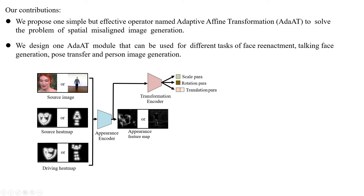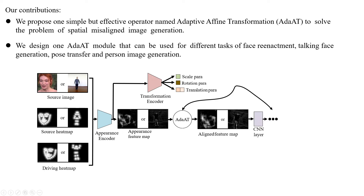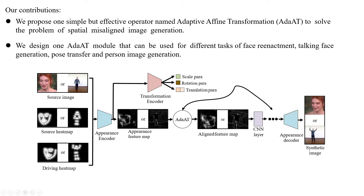Then, appearance feature maps are input into one transformation encoder to compute the affine parameters of scale, rotation and translation. Next, two adaptive affine transformation operators and three convolutional layers are used alternately to align feature maps. One extra adaptive instance normalization is used to add textural details. Finally, aligned feature maps are input into one appearance decoder to synthesize the output image.